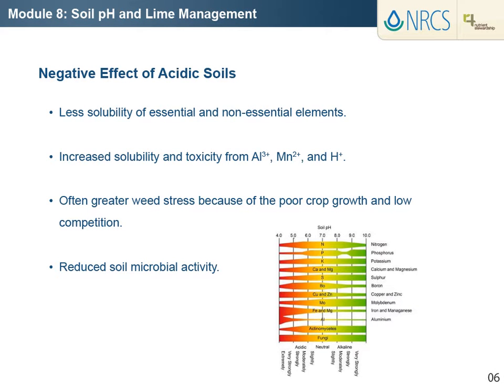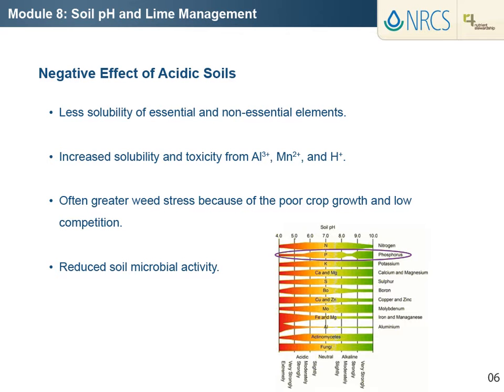Knowing the soil pH helps identify the chemical reactions likely to be occurring. In general, important reactions from the standpoint of crop production are those dealing with solubility of essential and non-essential elements. The relative availability of several essential nutrients is greatly reduced at low pH, like phosphorus, for example. Toxicity from aluminum, manganese, and hydrogen is a major cause for crop failure in very acidic soils.